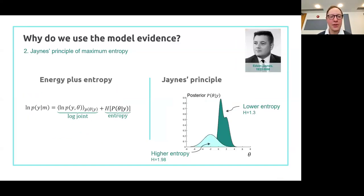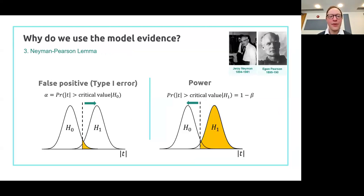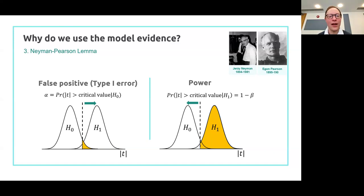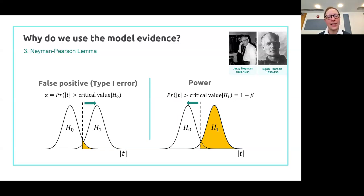I'm going to skip Jaynes' Principle in the interest of time. The Neyman-Pearson lemma states that a test based on a likelihood ratio — like a t-test, f-test, or chi-squared test — is the most powerful test you could do for any given effect size. You can generalise that to Bayesian statistics. Because the Bayes factor is an example of a likelihood ratio, you can show that the Bayes factor is the most sensitive test for a given effect size. There's no test you could develop that would be more powerful — which underscores again why we use it.